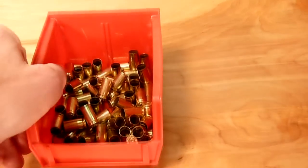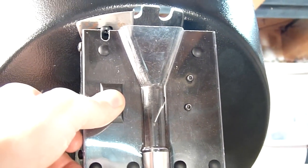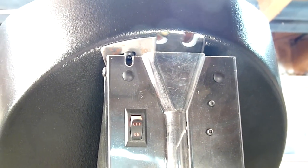We're going to take this bin of brass and put it into the case feed bowl. Next we can turn the case feed system on, which will start to fill the drop feed.